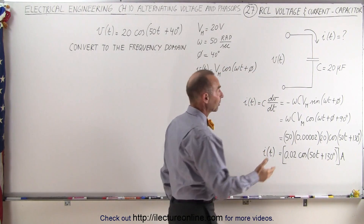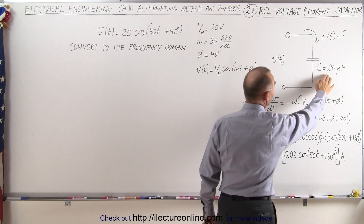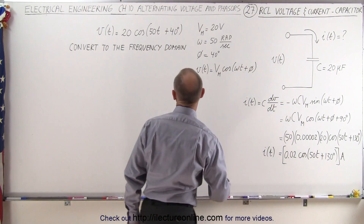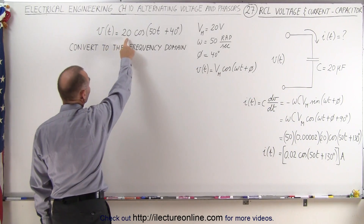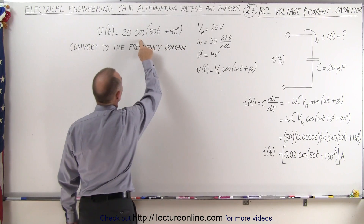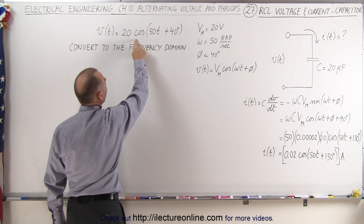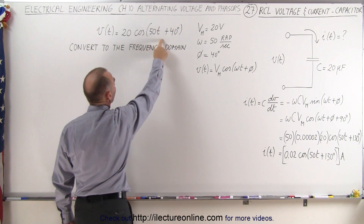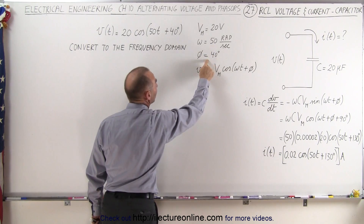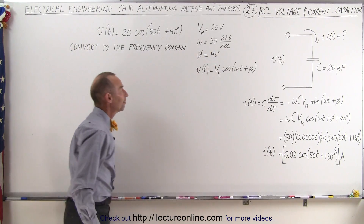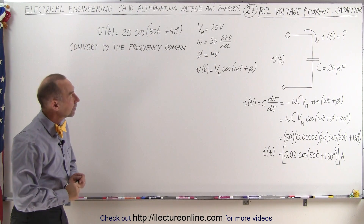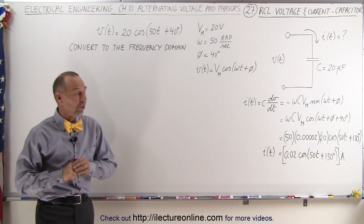The capacitor has a capacitance of 20 microfarads, and the input voltage is time-varying. It has a maximum voltage of 20 volts times the cosine of 50t plus 40 degrees. 50 is the angular frequency, and the phase angle is 40 degrees.